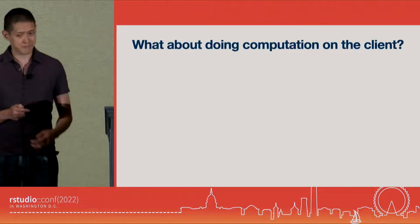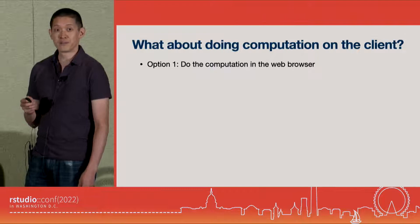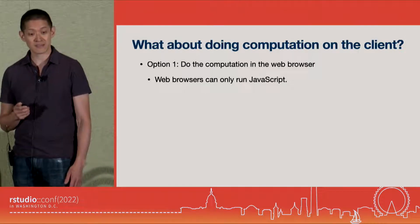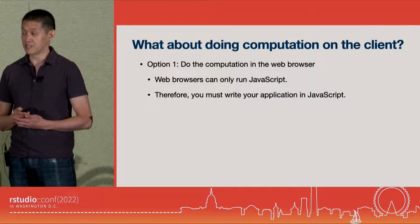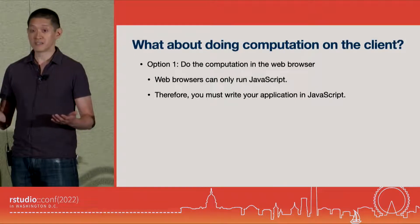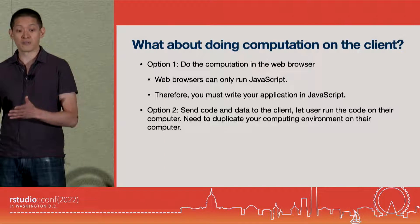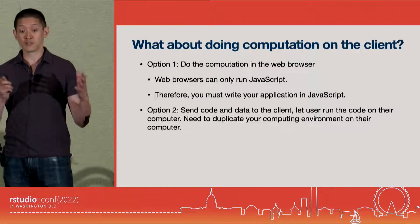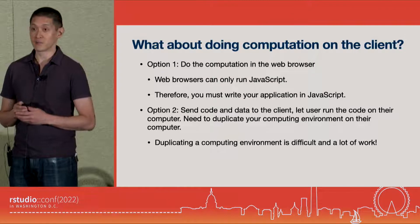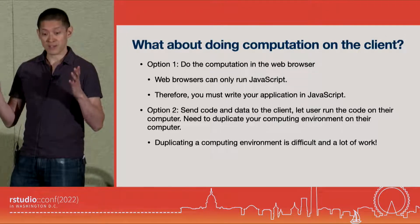What about doing computation on the client? You have a couple of options. One is to do the computation in the web browser, but if you know something about web browsers, you know that the only language they understand is JavaScript, so you must write your application in JavaScript. That can be a problem if you're doing data science, because a lot of the tools you're used to might not exist in JavaScript. Another option: send the code and data to the client and let the user run the code on their computer. In order to do this, you need to duplicate your computing environment on their computer, and doing that is difficult and a lot of work. You can't reasonably expect somebody to take that fun survey and have to install R or Python and a whole bunch of packages just to do that.